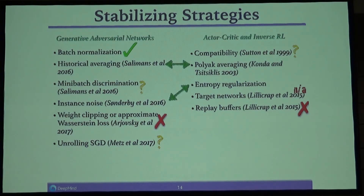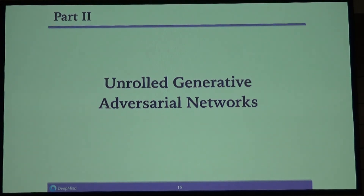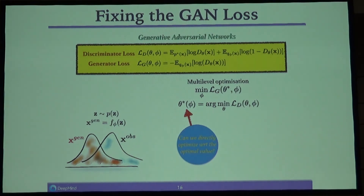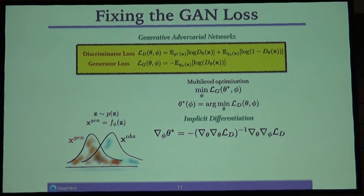With the remaining time, I want to discuss unrolling SGD. It would be nice if instead of alternating minimization — optimizing the generator with respect to the current discriminator and vice versa — you could optimize with respect to the optimal value of the inner optimization. This is generally applicable to multi-level optimization. One approach is running the inner optimization to convergence and using implicit differentiation to compute gradients of the outer objective — but this requires a nasty inverse Hessian and probably isn't the most scalable approach.